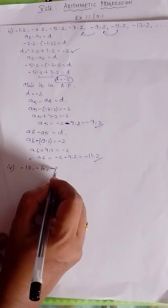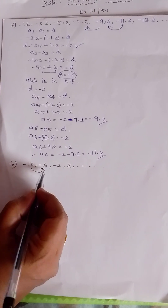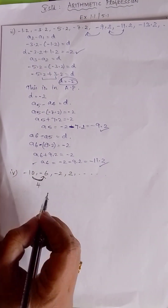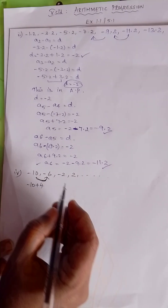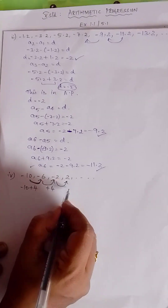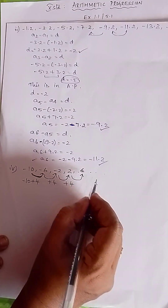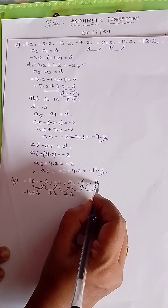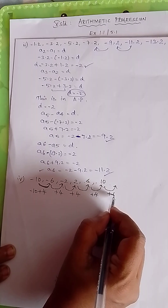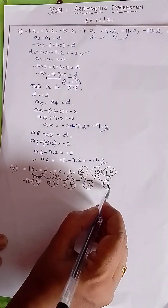Next problem: -10, -6, -2, and 2. Here you can guess — from -10 to -6 the gap is 4. Minus 10 plus 4 = -6; plus 4 = -2; plus 4 = 2. So the next terms would be: plus 4 gives 6, plus 4 gives 10, plus 4 gives 14. Since we have the same common difference, it is an AP.